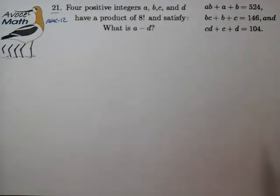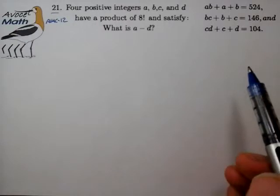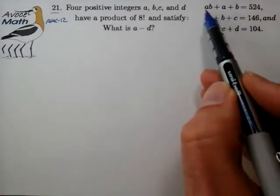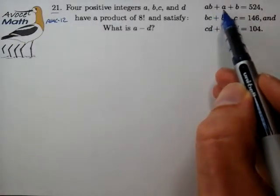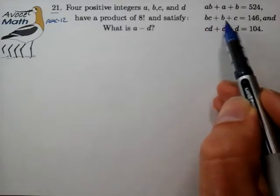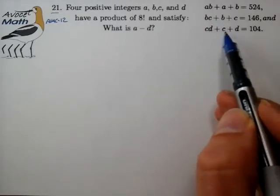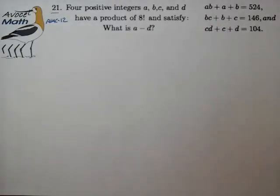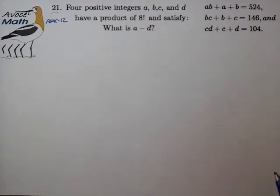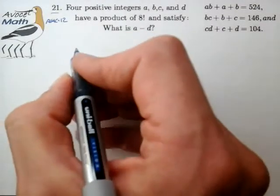On the converse, the thing I do notice is that this grouping of AB plus A plus B, BC plus B plus C, CD plus C plus D falls into one of the factoring forms that we've gone over in previous videos. It's a factoring form that shows up just about every year on the AMC. So I definitely recognize this, and that's my first hint of how I'd like to proceed.